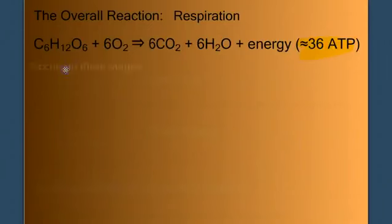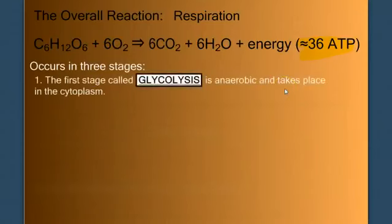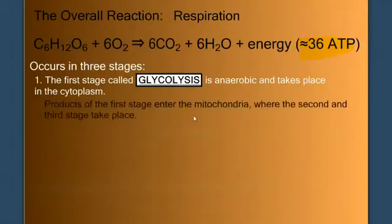Cellular respiration is going to occur in three stages. The first stage is called glycolysis. It's an anaerobic stage that takes place in the cytoplasm. The products of glycolysis will enter the mitochondria where the second and third stages of respiration occur.